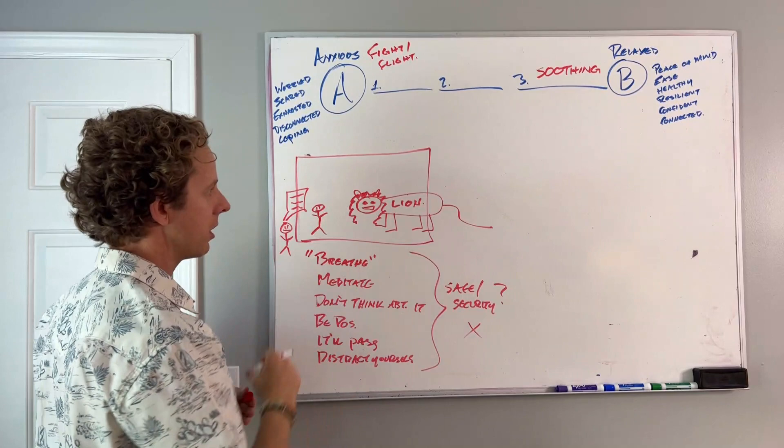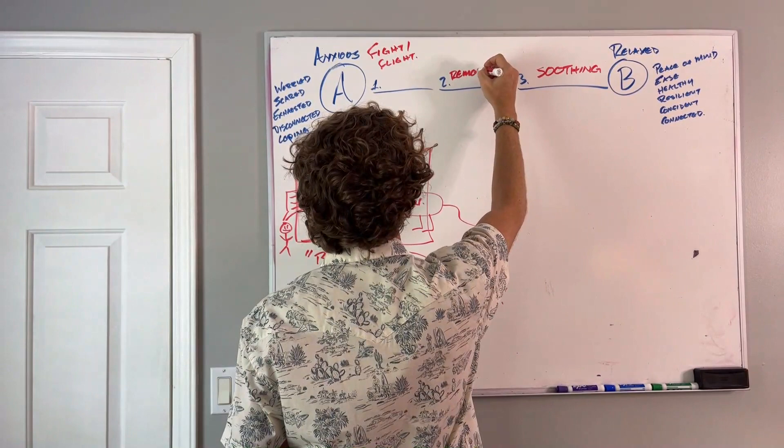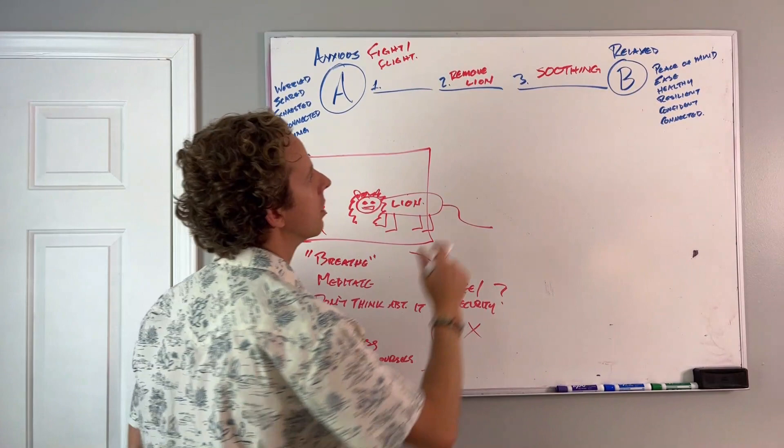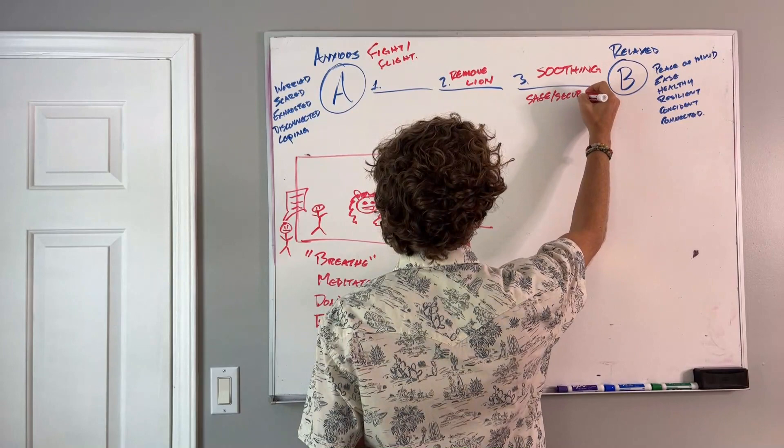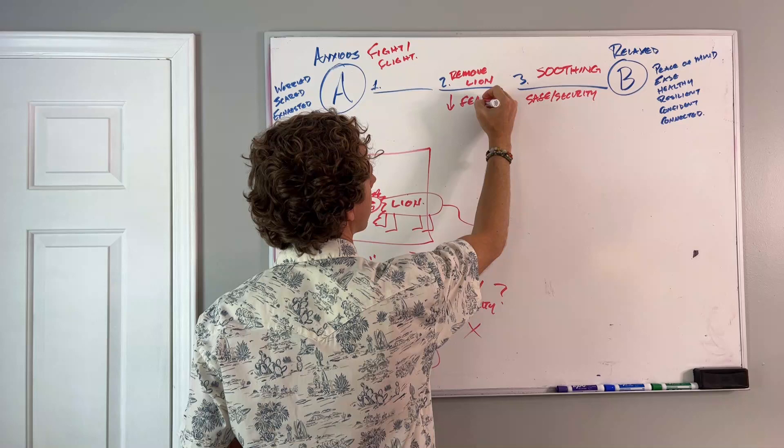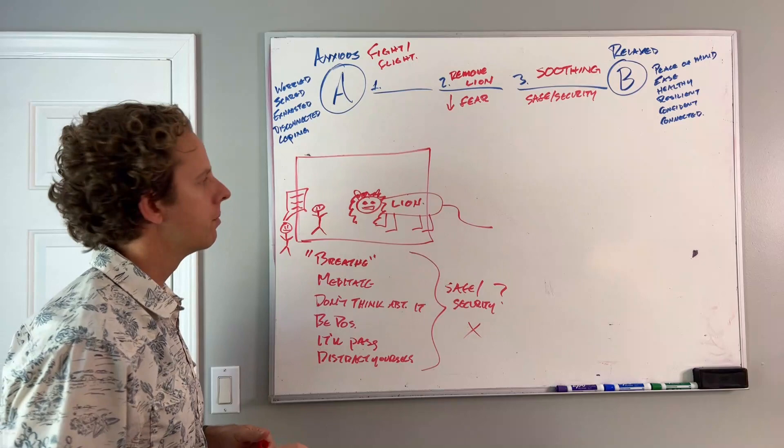So step two is actually about removing the lion from your situation. Soothing is about restoring feelings of safety and security. Removing the lion is about decreasing fear. But that's not exactly true. You don't have to remove the lion.